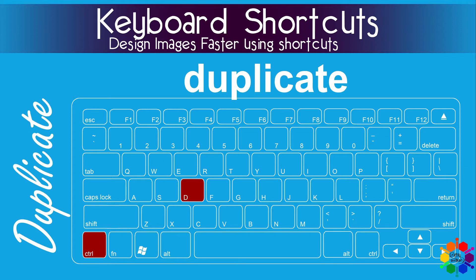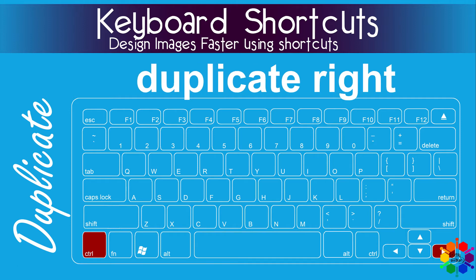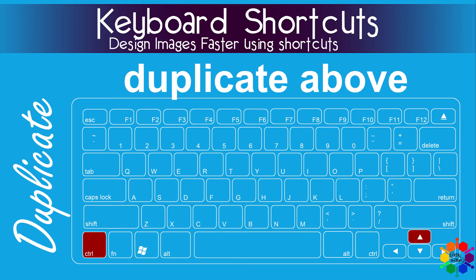The Duplicate menu. Duplicate: Ctrl D. Duplicate left: Ctrl and the left arrow. Duplicate right: Ctrl and the right arrow. Duplicate above: Ctrl and the upward arrow.